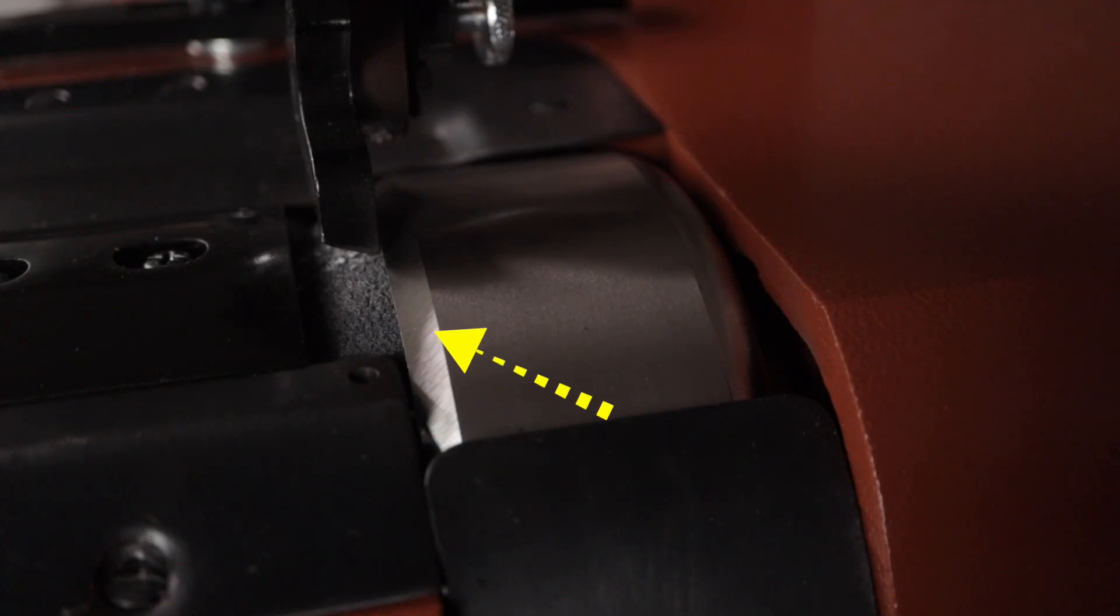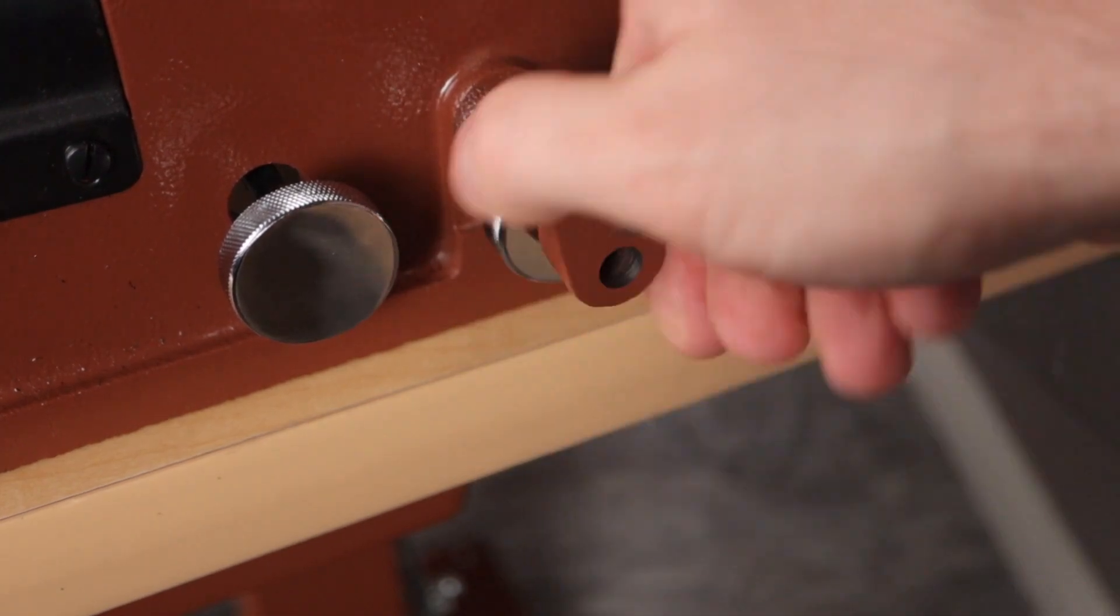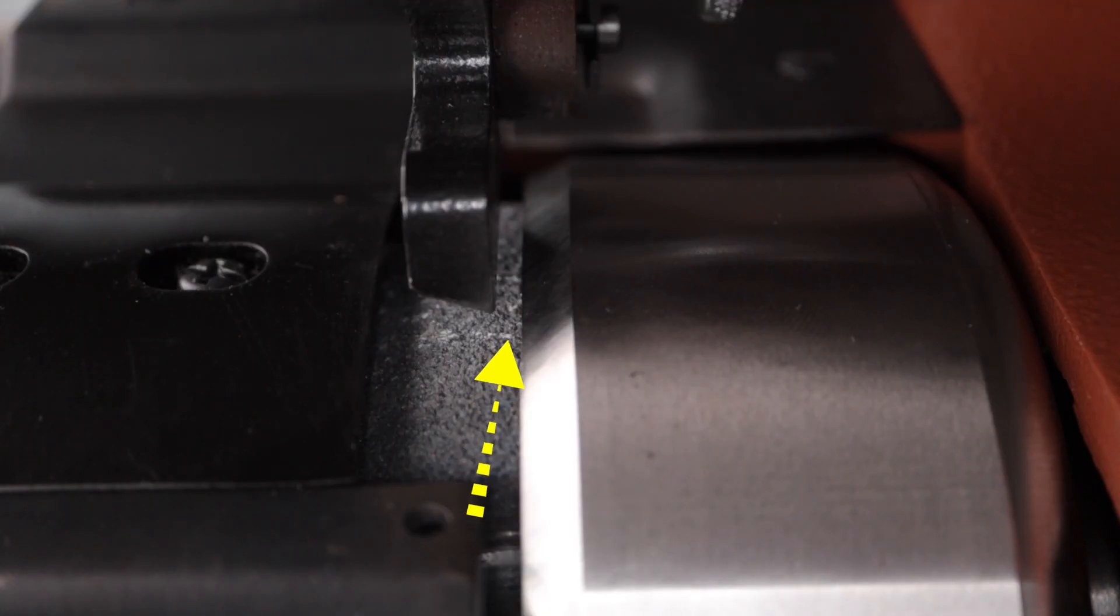Now you will see the blade has a beautiful fresh single bevel. So we are going to add a second bevel, which allows you to skive thinner and smoother. Start by turning the blade position handle and move the blade one quarter of an inch away from the presser foot.